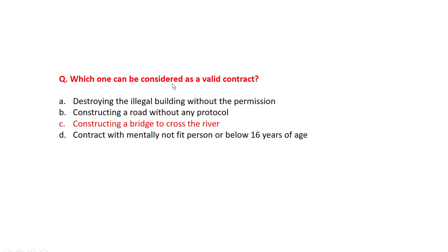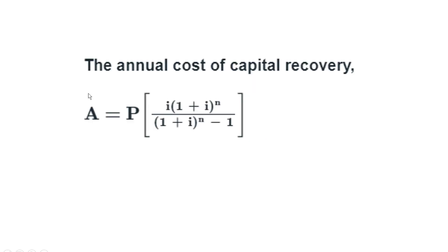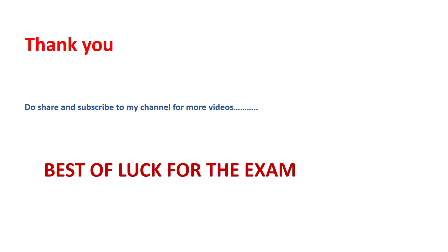The next question: which one can be considered as a valid contract? Options are: demolishing an illegal building without permission, constructing a road without any protocol, constructing a bridge to cross the river, or a contract with mentally unfit persons or persons below 16 years of age. The correct option is constructing a bridge to cross the river. Also, the annual cost of capital recovery formula is: A = P × i × (1+i)^n / ((1+i)^n − 1).